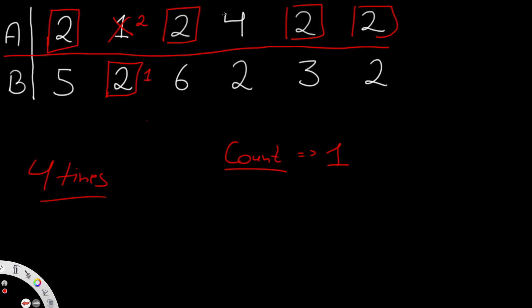Further along, 2 does not exist in A, so we check if 2 exists at the same index in B. It does, so we make another swap and count increases to 2. One thing to notice: when 2 exists on both sides, we always pick the value already in the target row to minimize swaps. If we had chosen the other side, count would have been 3 instead of 2. So our count for this case is 2.